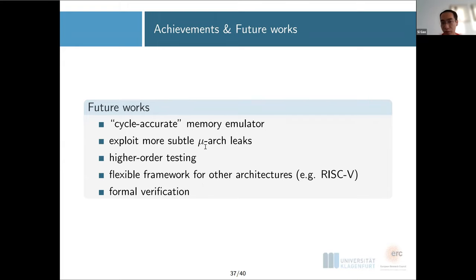For future works, as I mentioned, we don't really have a cycle-accurate memory emulator, which can be a big problem for memory simulation. We are using our information to exploit more subtle microarchitecture leaks. This is an ongoing project for one of the PhDs. I've done some higher-order testing. Everything I've done in this talk is first-order. We are also working on a flexible framework that can work for other architectures as well, for example RISC-V. And last but not least, the leakage model presented here can also be used for formal verification. So if you're interested, that's also a future study direction.